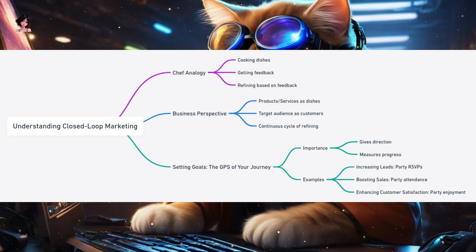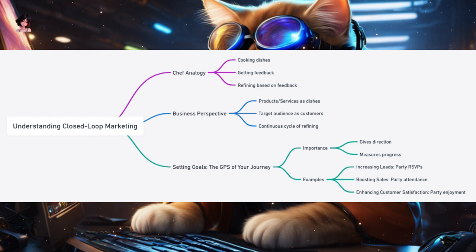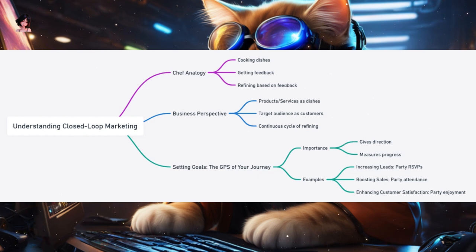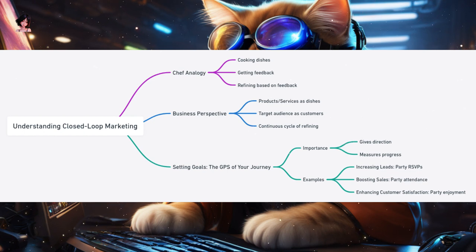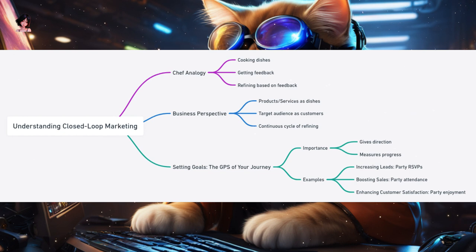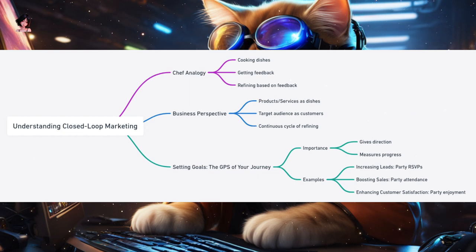Once you've decided on your destination or goal, you can plan the best route to get there. This route is your marketing strategy. And just like you might change routes if there's traffic or a roadblock, in closed-loop marketing, you'll adjust your strategies based on the feedback and data you gather.